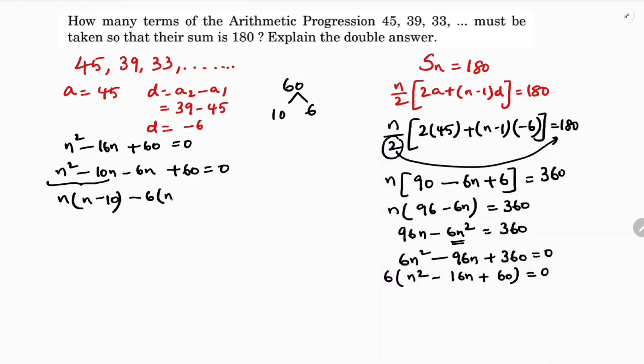In the first two terms if I'll take n common, n minus 10. In the next two terms if I'll take minus 6, n minus 10. So n minus 10 into n minus 6 equals 0. So n minus 6 equals 0, n minus 10 equals 0. N equals 6, n equals plus 10.